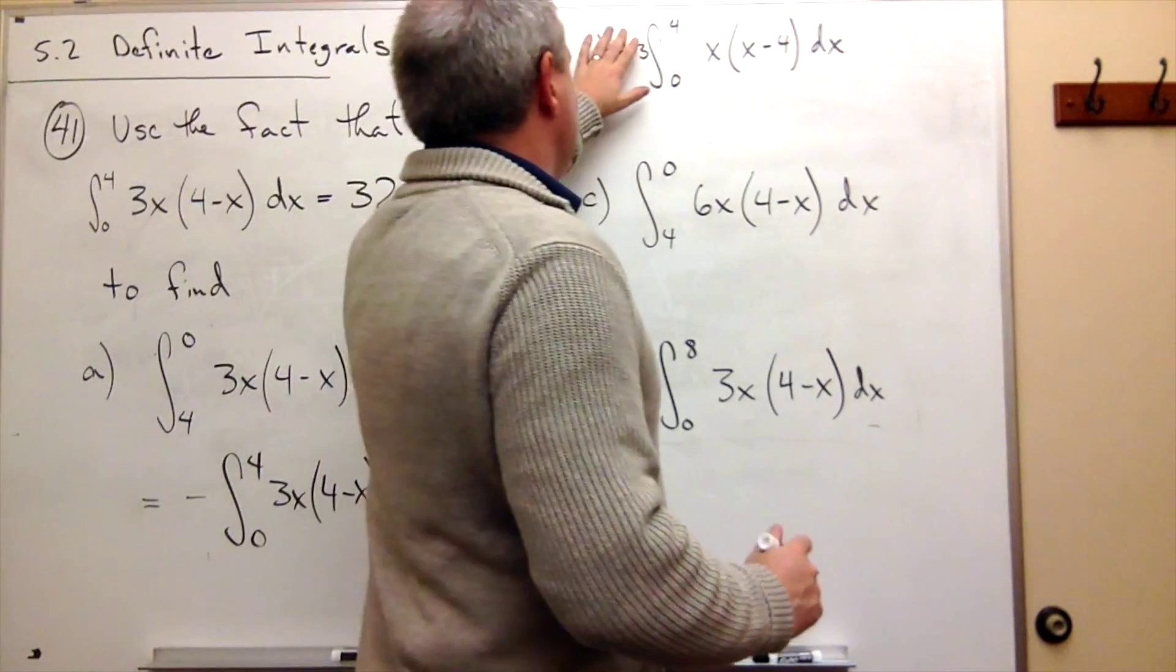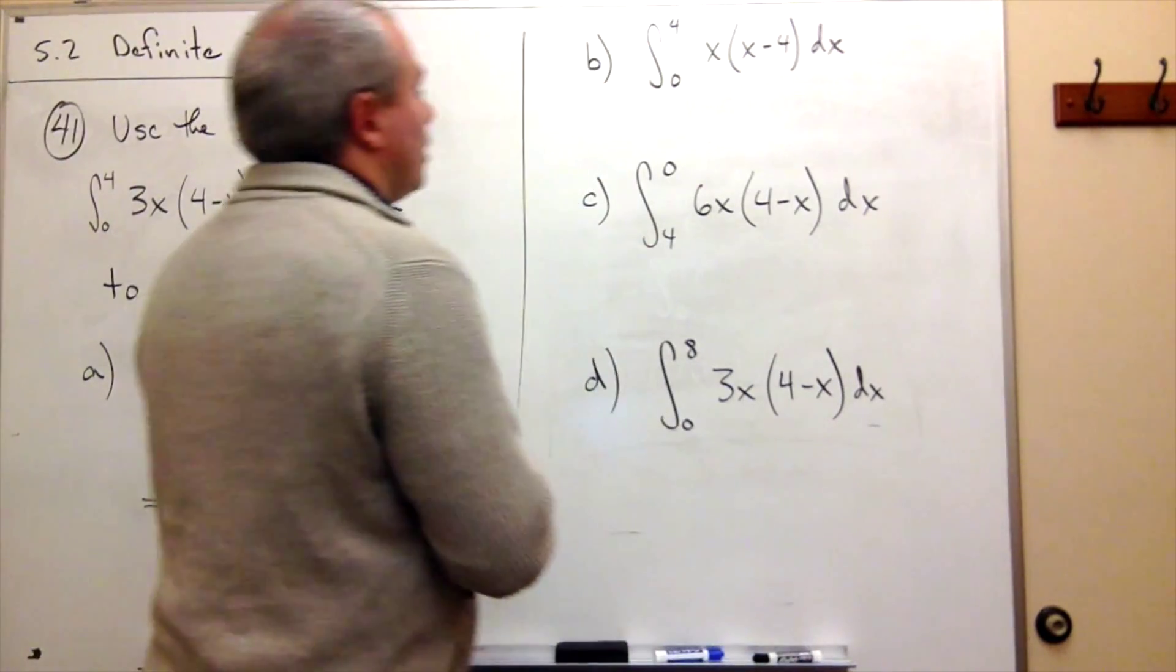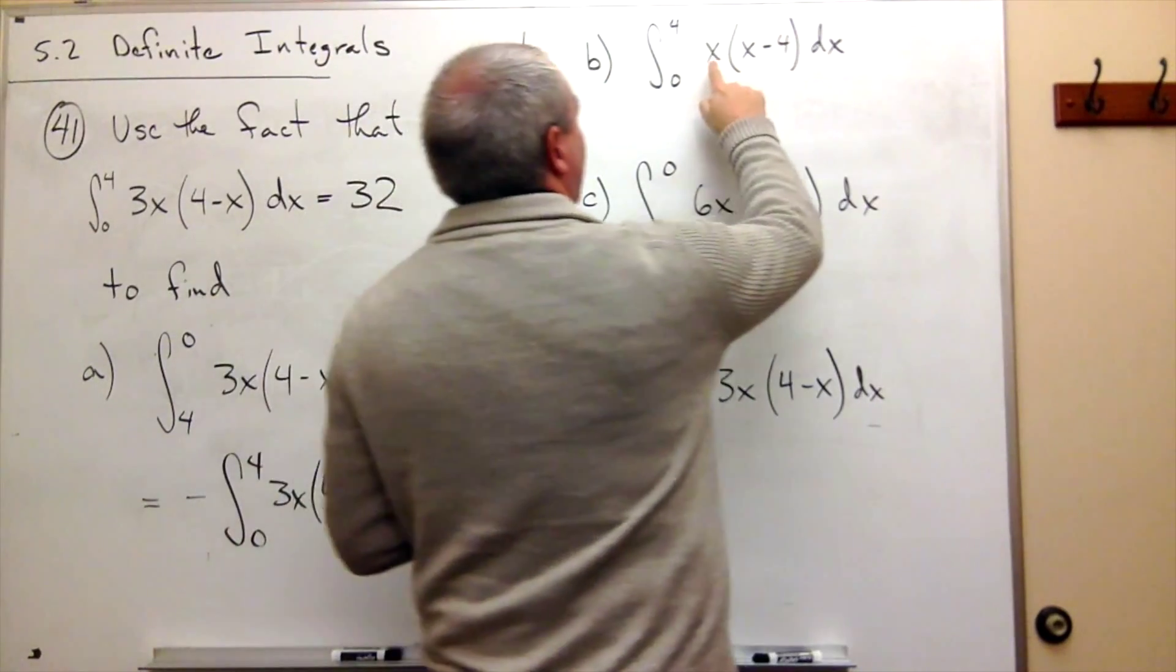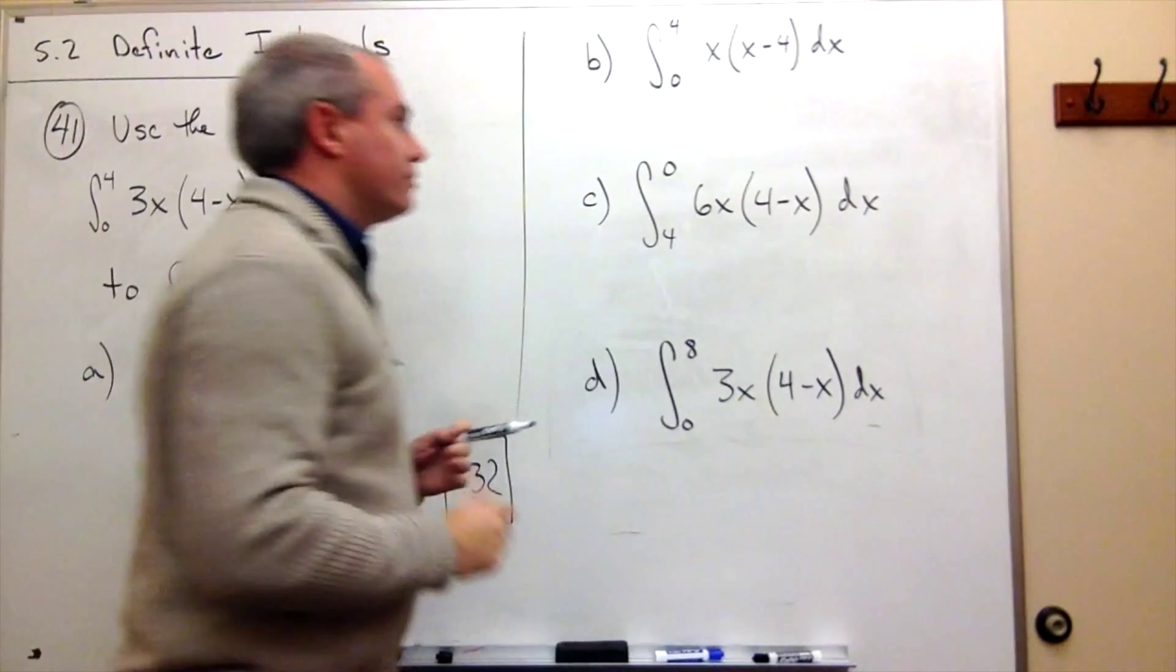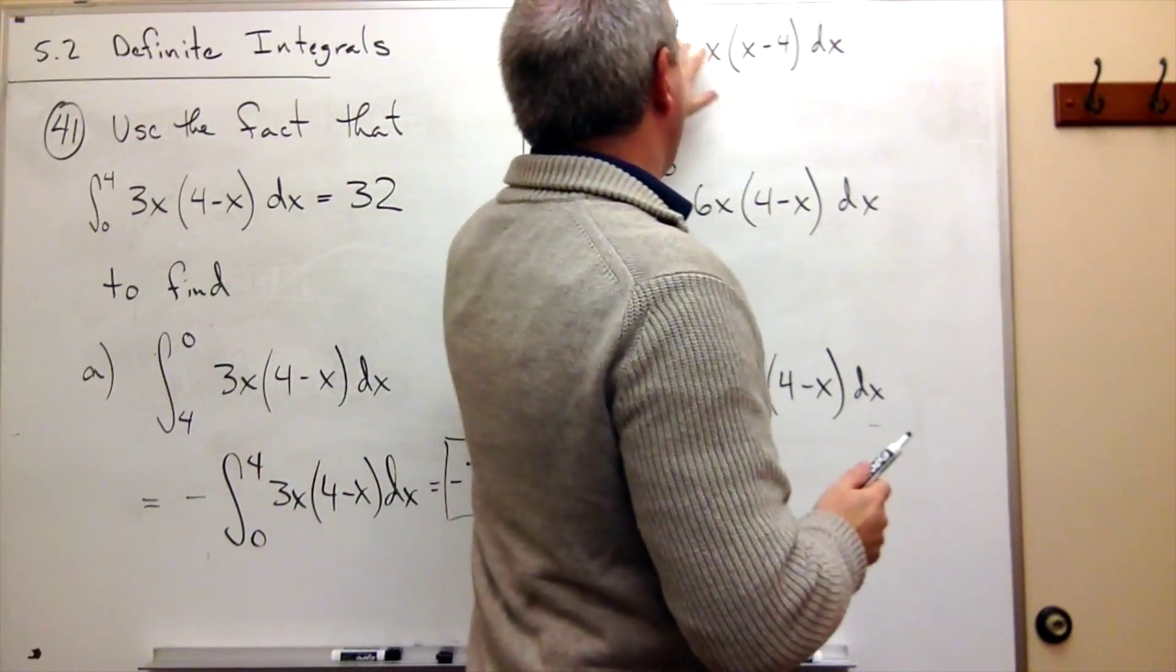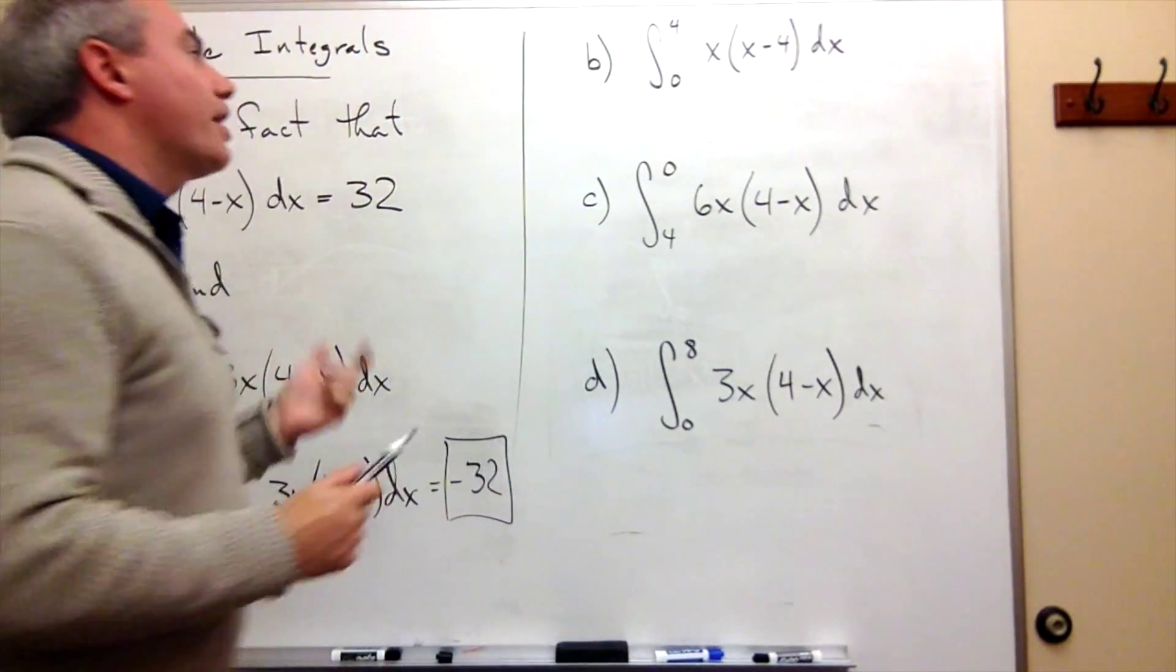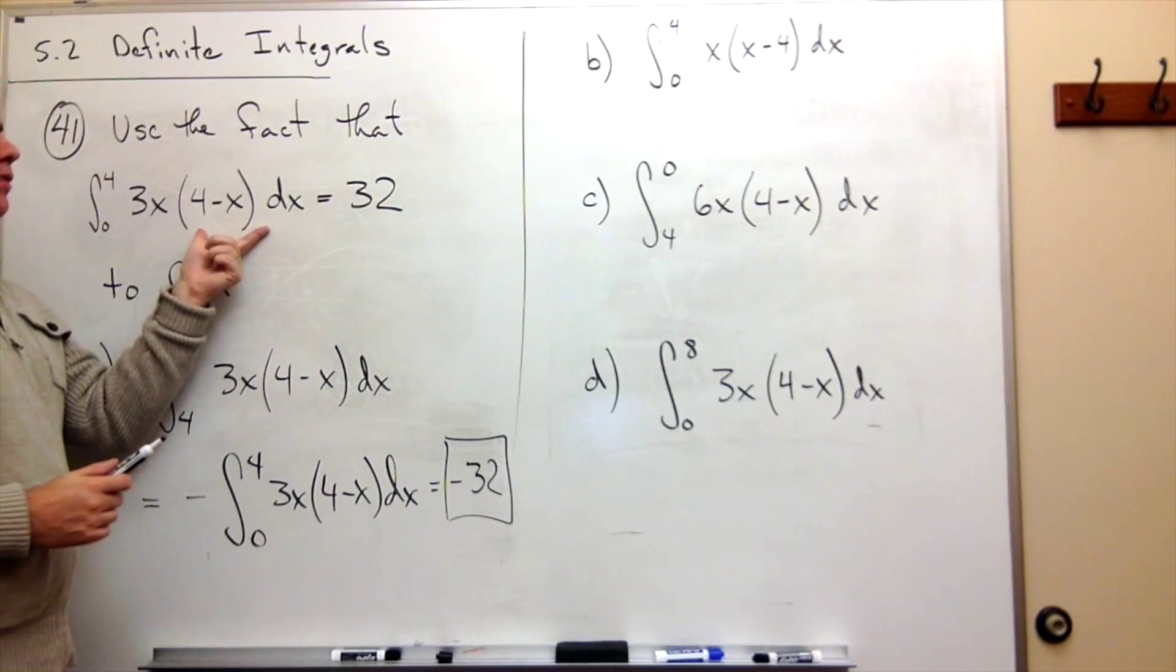Now let's come up here to part b. In part b, I have the integral from 0 to 4 of x times x minus 4 dx. All right, so integral from 0 to 4 of x times x minus 4 dx. Well, there are a couple things that are a little bit different than the integral that I started with here.